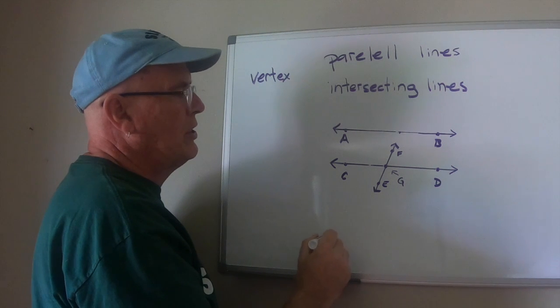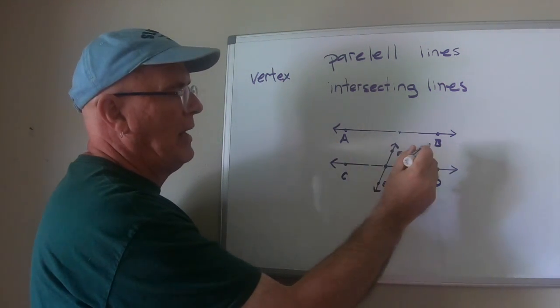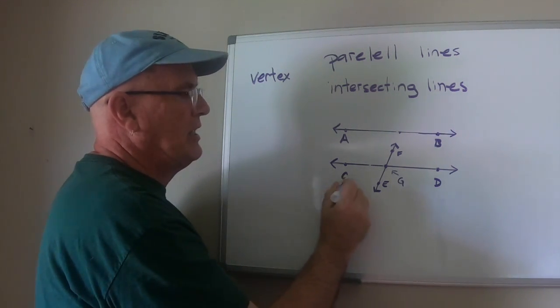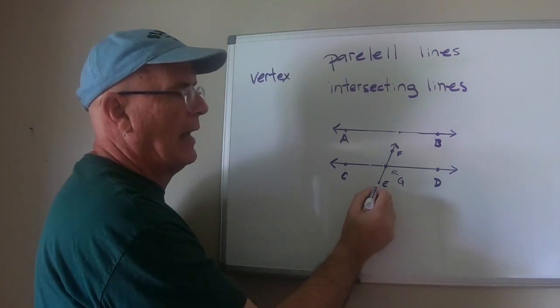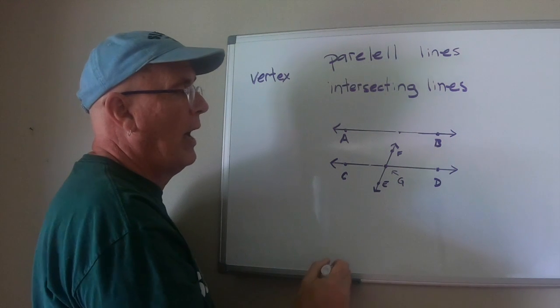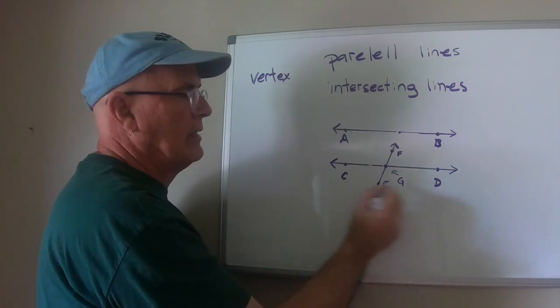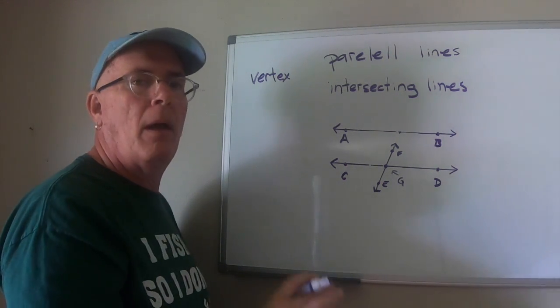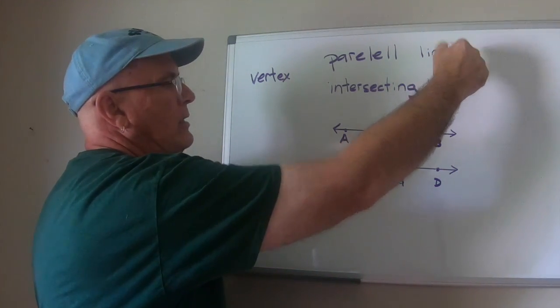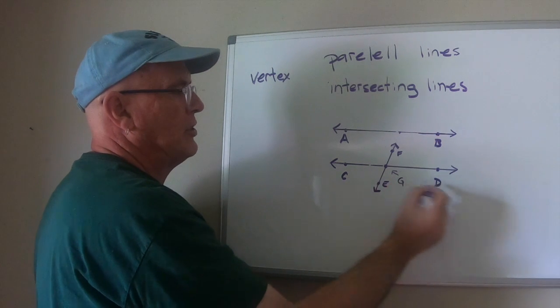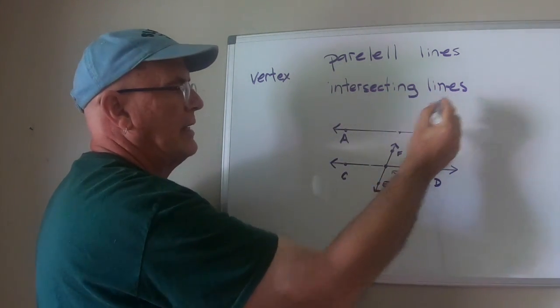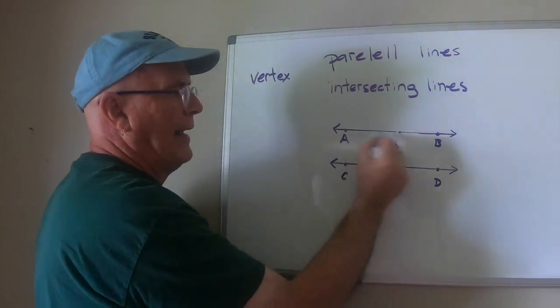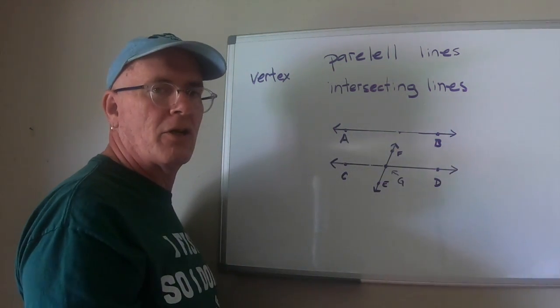So you can say that line AB intersects with line EF. And you could say that line CD intersects with line EF. But line AB and line CD will never intersect. And that makes them parallel. So parallel lines, AB and CD. And intersecting lines, CD and EF, or AB and EF, are intersecting lines.